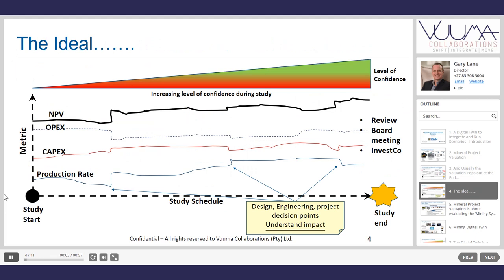Ideally, we need a techno-economic model of the study right from the minute the project starts. It could be a very high-level, top-down model so that you can plot production rate, CAPEX, OPEX, and NPV as the project progresses. As you do design, engineering, and make project decisions, you understand the actual impact on the financial numbers. The level of confidence increases as more information is gathered, enhancing the model so you can make proper engineering optimization and value-based decisions, tracking the project through its full study.